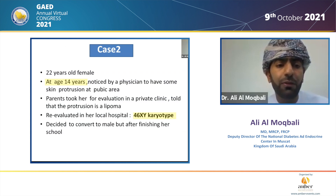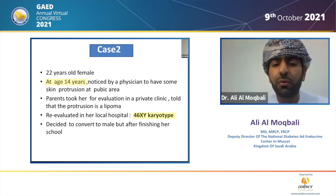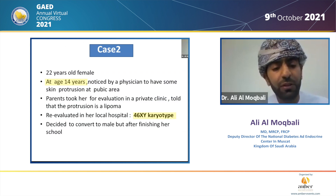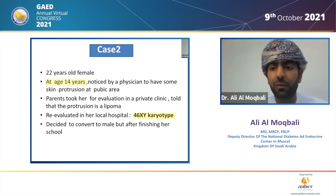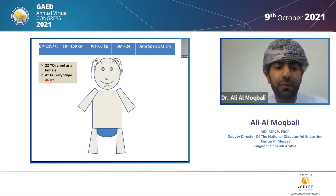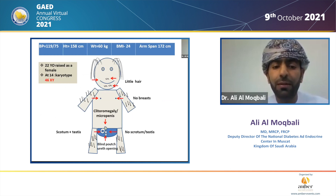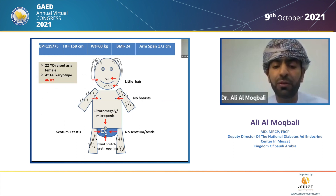Case number two: a 22-year-old female who at age 14 was noticed by her physician to have some skin protrusion at the pubic area. She was raised as a female and later evaluated — initially reassured this was a lipoma. When re-evaluated, her karyotype was 46XY. She decided to convert to male but after finishing school, presenting to us for the process of conversion at age 22. On examination, she has some female phenotypes, some hair, no breast, a scrotum and testes on one side, no scrotum or testes on the other side, clitoromegaly or micropenis, and a blind pouch.